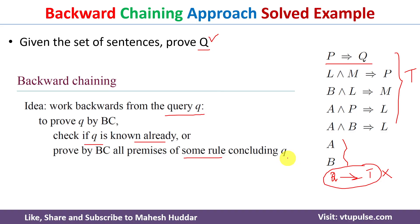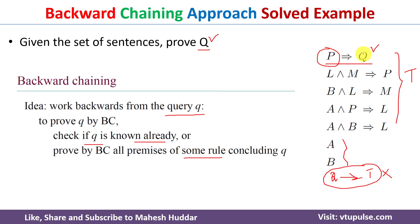If the query is present on the conclusion side of a rule, what we need to do is prove all its premises as true. In this case, this is the only rule where Q is present on the conclusion side. So we need to prove all its premises — in this case P is the only premise. We need to prove P is true; if P is true then Q is true.